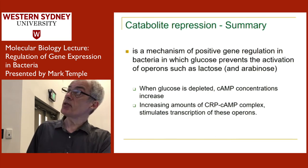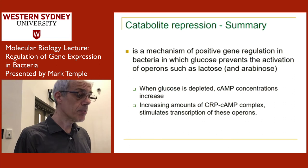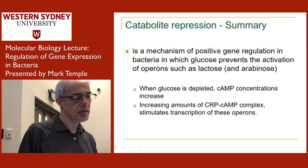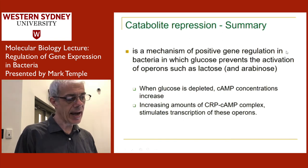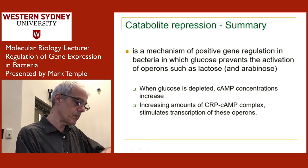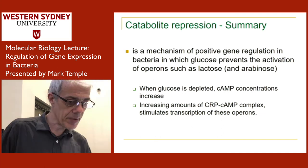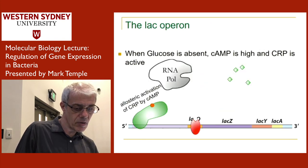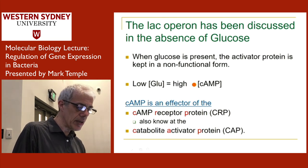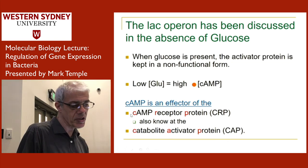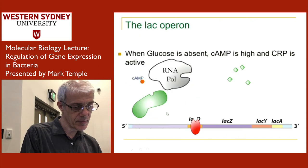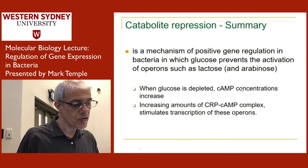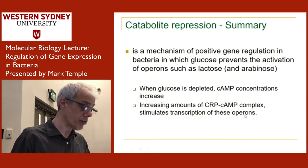The process I've described is called catabolite repression — glucose represses the expression of the lac genes. Alternatively you can think about it as positive regulation because you're getting activation by cyclic AMP. Both descriptions refer to the same process. When glucose is depleted, cyclic AMP levels increase, the CRP protein is activated, and it stimulates transcription of the lac operon.